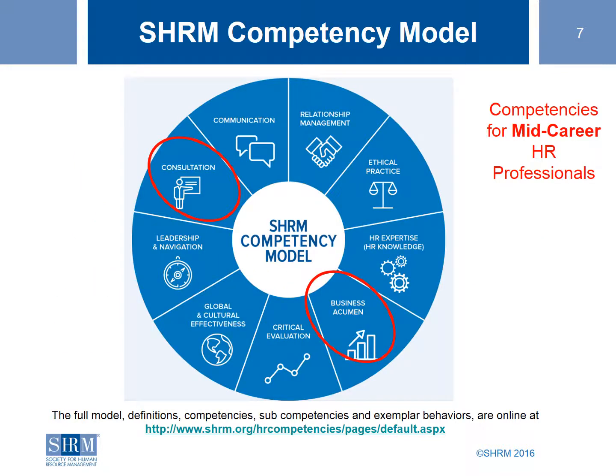As you can see, the SHRM competency model for early career covers communication, relationship management, ethical practice, and HR knowledge or expertise. For the mid-career, there are two that are important: consultation and business acumen.